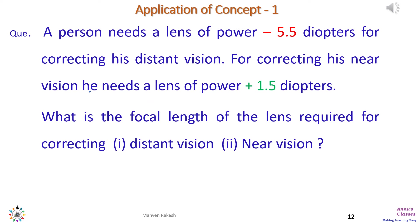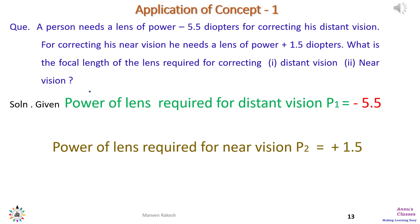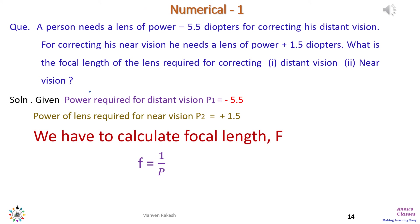Let us now solve two numerical problems. The first problem states: a person needs a lens of power minus 5.5 diopters for correcting his distance vision, and for correcting his near vision he needs a lens of power plus 1.5 diopters. The question asks for the focal length of the lens required for correcting, first, distant vision and second, near vision. The given data is: P₁ = −5.5 diopters for distant vision, and P₂ = +1.5 diopters for near vision.